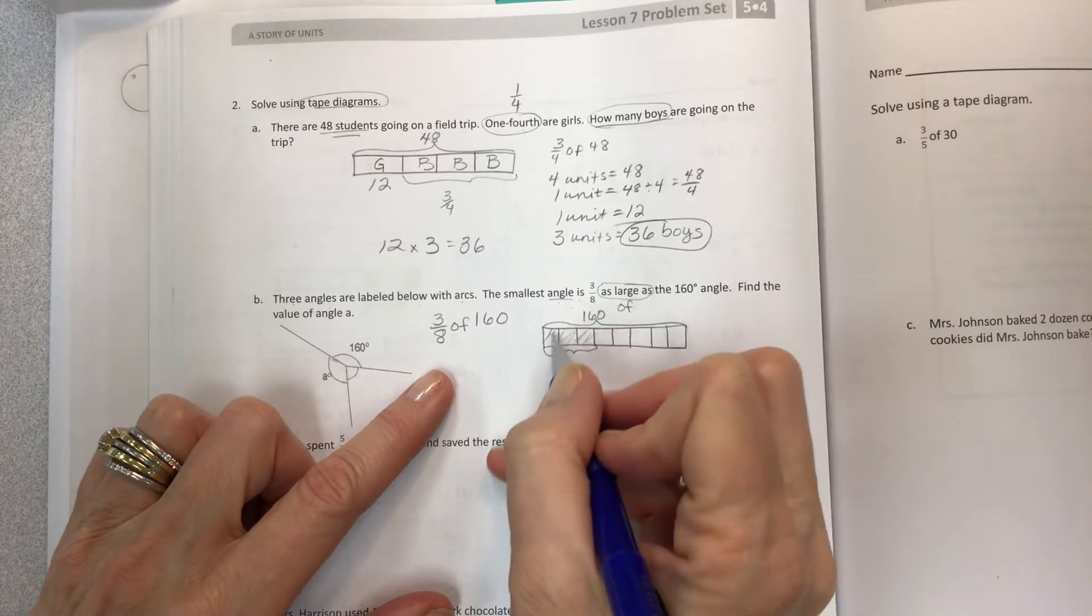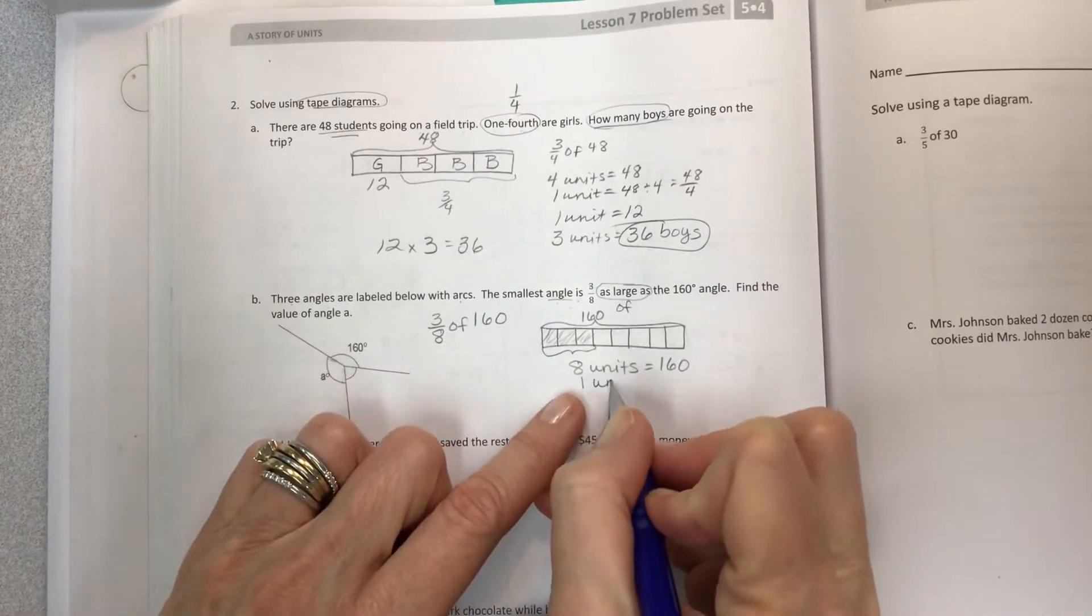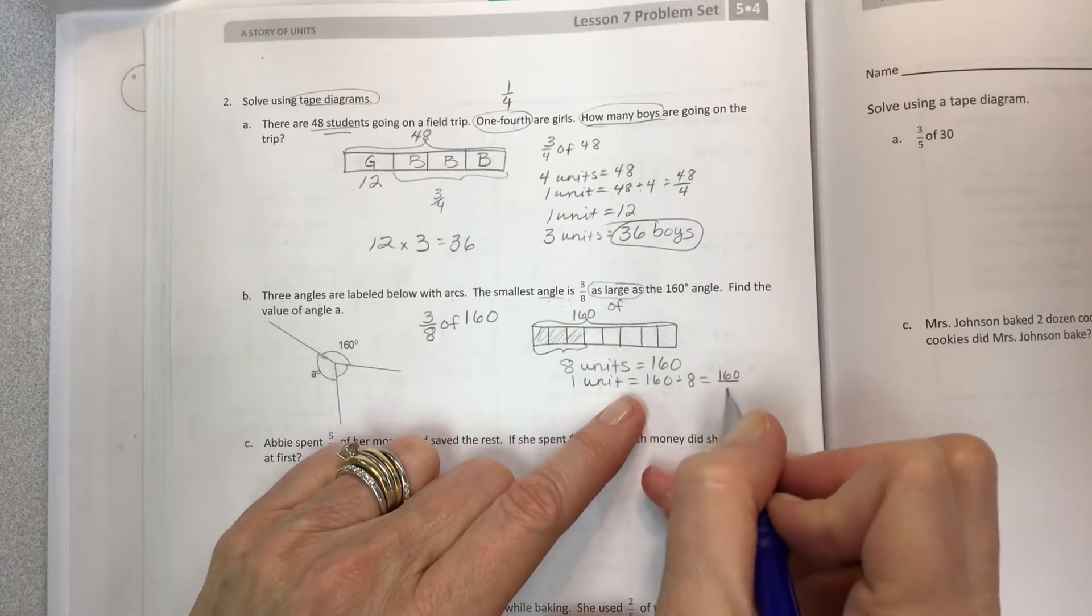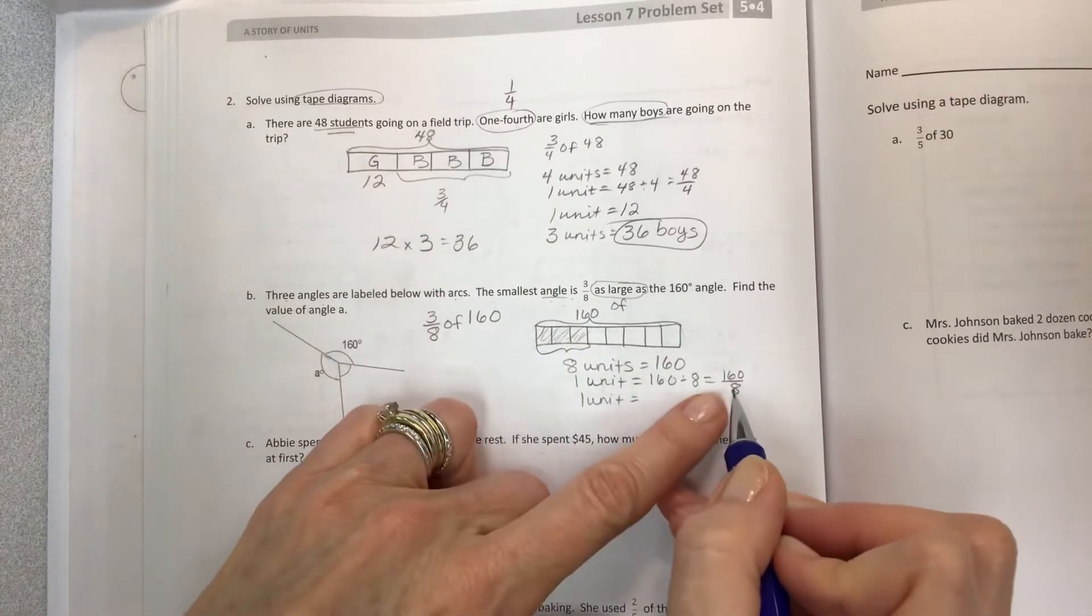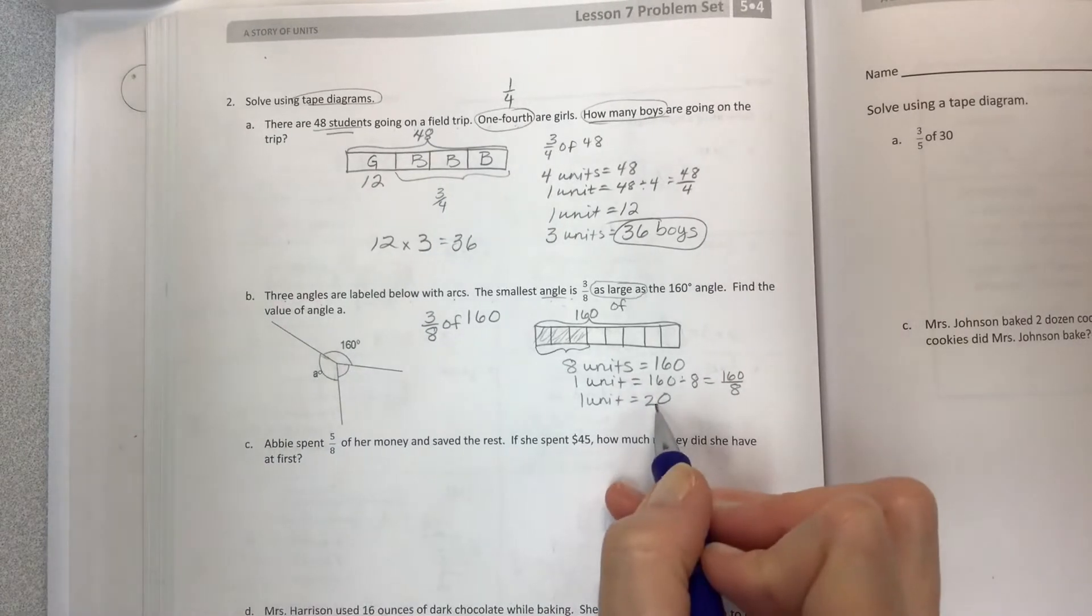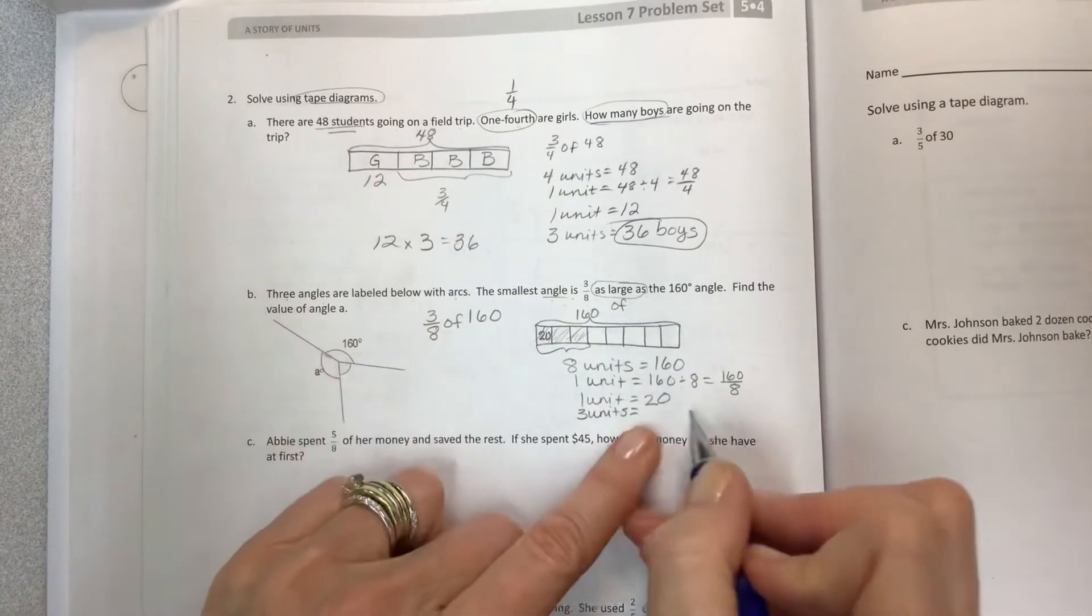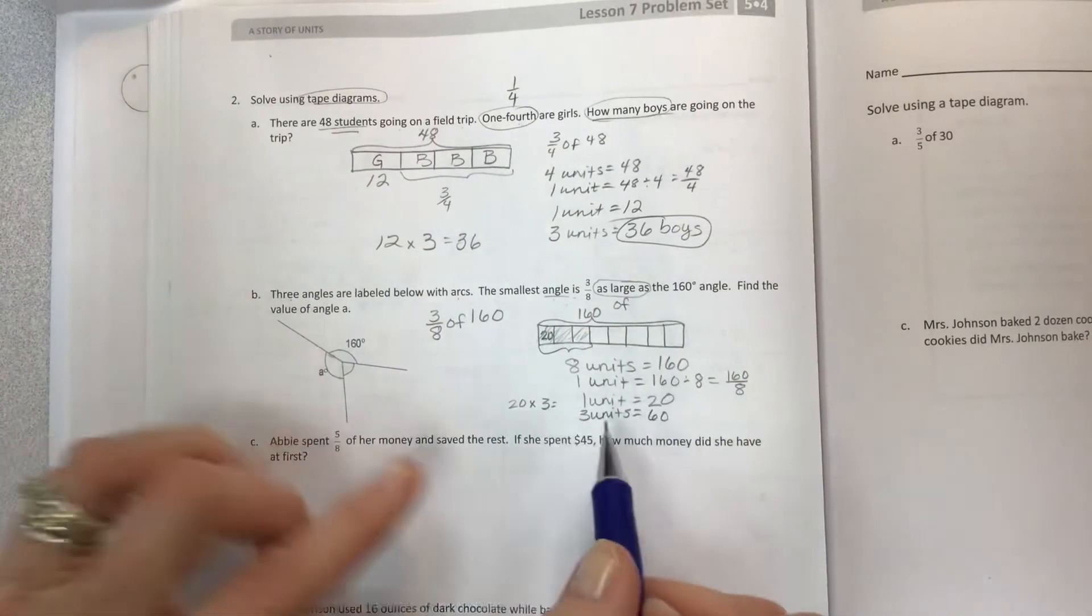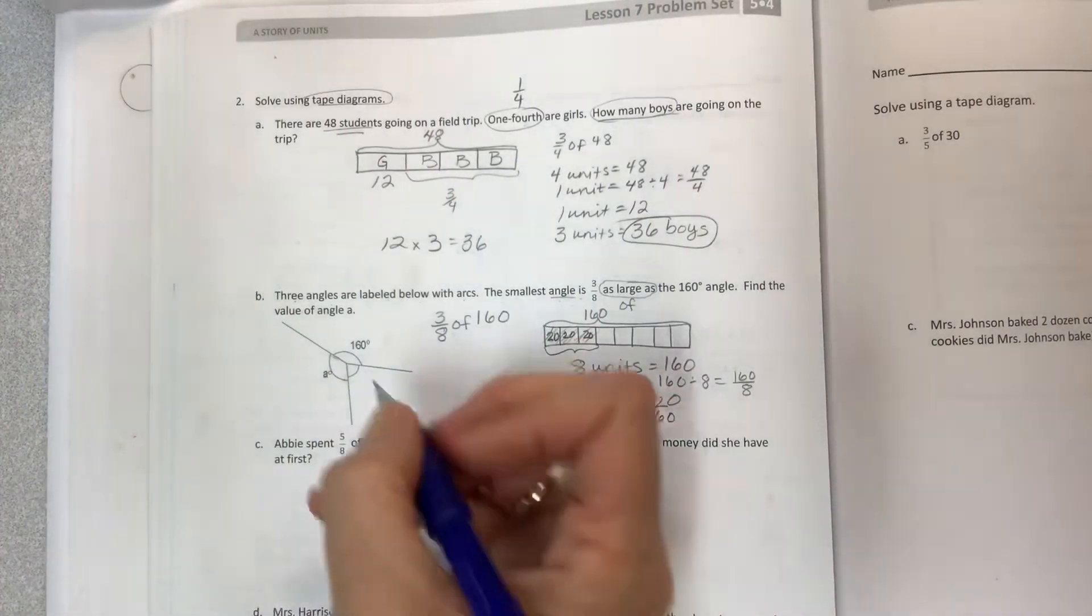If eight pieces or eight units make 160, let's find one unit. It's 160 divided by 8. Looking for that mental math. Then I have 16 divided by 8 for 2, but hold that place value position because zero divided by 8 is zero. If one unit is 20 and I need to know three units, that would be 20 times 3. 20, 40, 60. Mental math again, if you need to use repeated addition, do what you need to. This is 60.